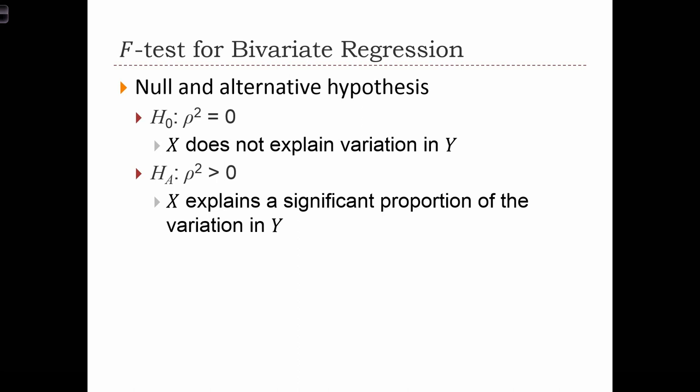The alternative hypothesis is that rho squared is greater than 0, in which case x explains some significant proportion of the variation in y.